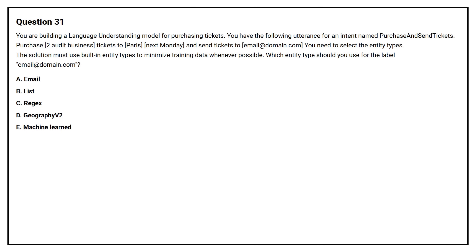Question No. 31. You are building a language understanding model for purchasing tickets. You have the following utterance for an intent named 'purchase and send tickets': 'Purchase two audit business tickets to Paris next Monday and send tickets to email@domain.com.' You need to select the entity types. The solution must use built-in entity types to minimize training data whenever possible. Which entity type should you use with the label email@domain.com?